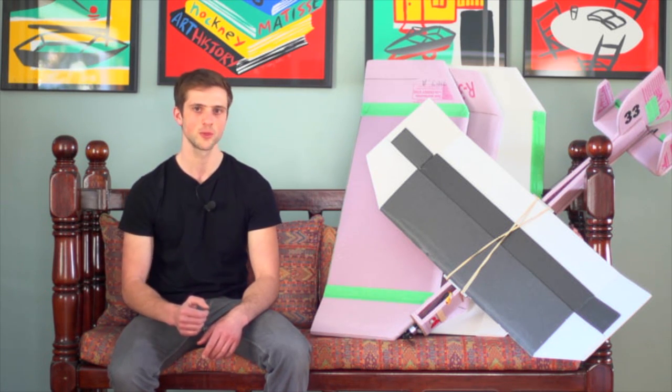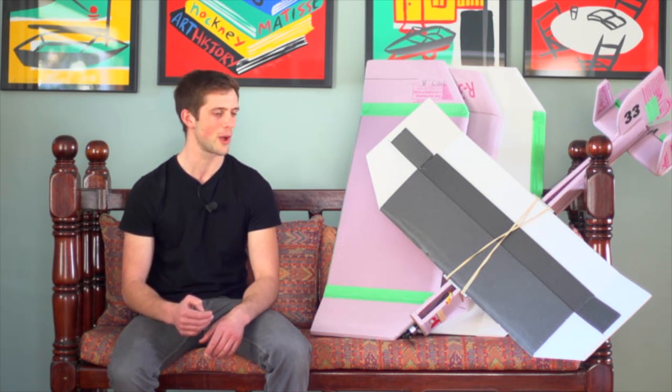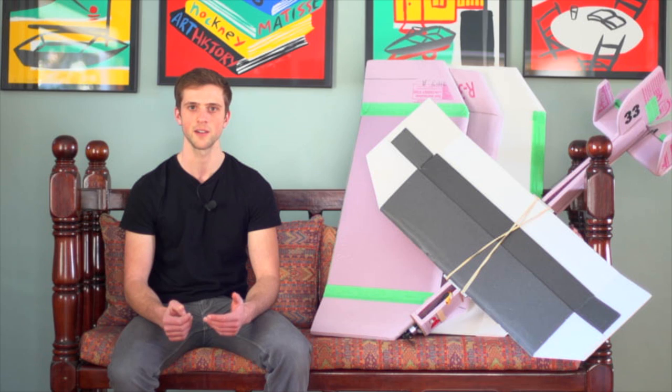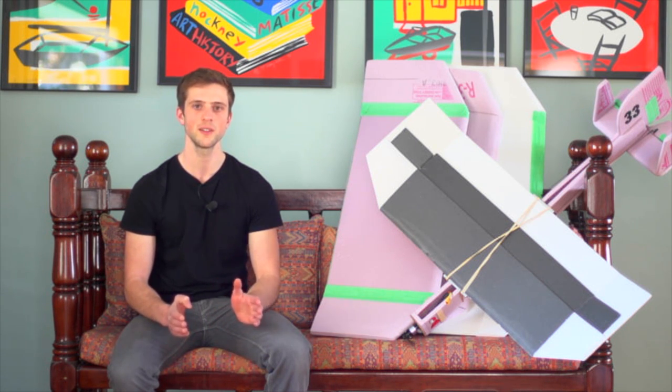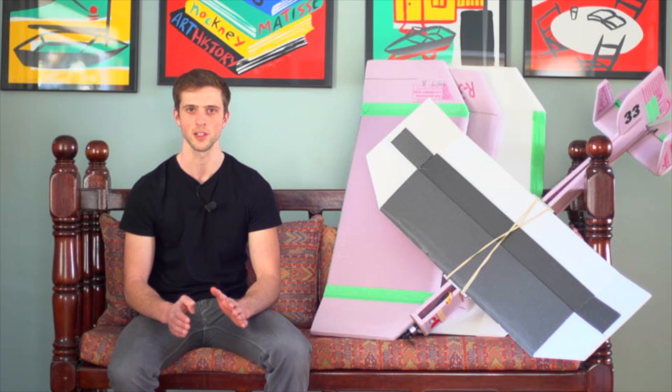So I have my basic scratch-built trainer here. I have the initial unprofiled wing that I built for it. I also have three other wings, a KF-2 wing, a KF-3, and a KF-4, and I'm going to just be flying the plane around with the different wings to get a better idea of the flight characteristics of each one.